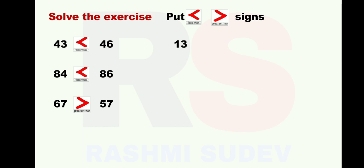Next sum: 13 and 9. 13 and 9 are the given numbers. 13 is to the left hand side, 9 is to the right hand side. 13 is the bigger or greater number and 9 is the smaller number. Hence we are going to put greater than sign. It will be read as: 13 is greater than 9.